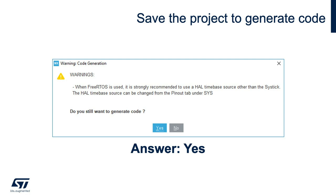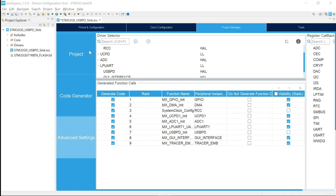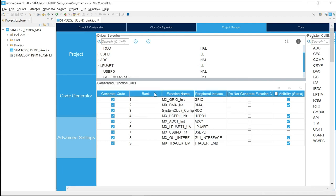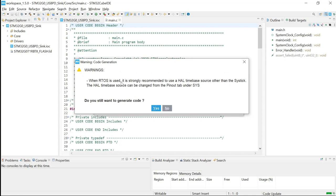We can now generate the code. Once you generate the code, you'll see a warning telling you that because you're using FreeRTOS, it is recommended to use a different timer than the SysTick, since SysTick is already used by the HAL. In a real application it would be better to use a different timer for FreeRTOS, but here because it's a simple application it won't have an impact, so we press OK. Save your project and confirm you want to generate the code, then change the perspective.